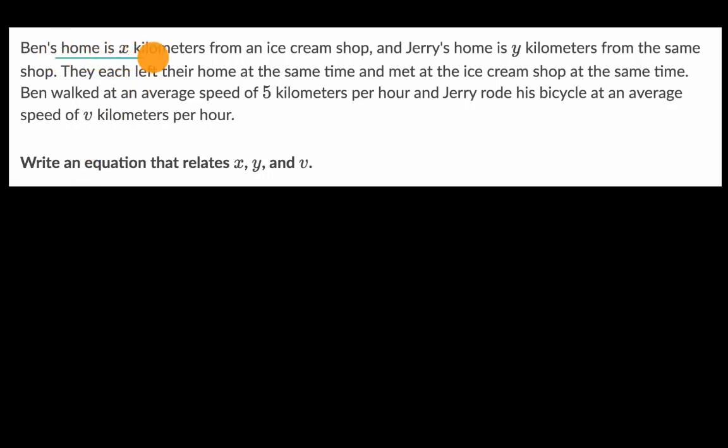We're told that Ben's home is X kilometers from an ice cream shop. Jerry's home is Y kilometers from the same shop. They each left their home at the same time and met at the ice cream shop at the same time.